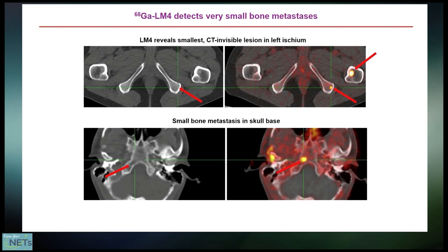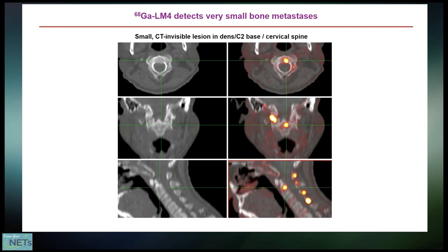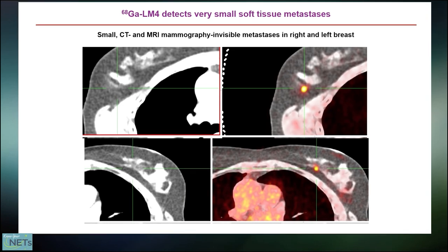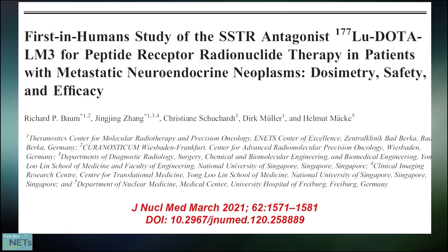As shown here, we can see very small bone lesions in the ischium on the left, and also in the proximal left femur and in the skull base, as well as in this patient with very small bone metastases in the cervical spine which are not even seen on the CT scan. So also in soft tissue, like in this case, breast cancer metastases of a neuroendocrine tumor — very small lesions not seen on CT or MRI in these patients.